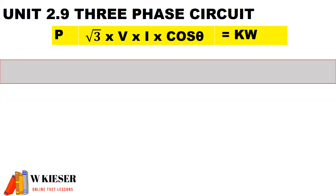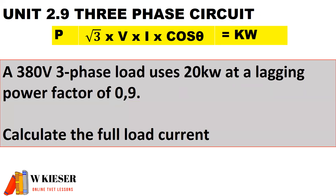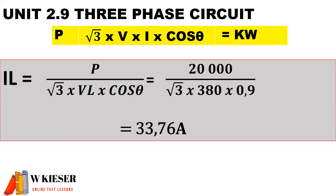When dealing with a three-phase circuit, we multiply by √3 — the rest of the formula remains the same. A 380-volt three-phase load uses 20 kilowatts at a lagging power factor of 0.9. Calculate the full load current. The full load current is the power divided by √3 × voltage × power factor. Therefore, we end up with a load current of 33.76 amps.